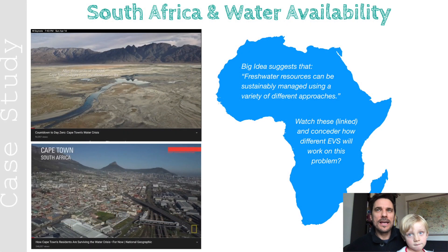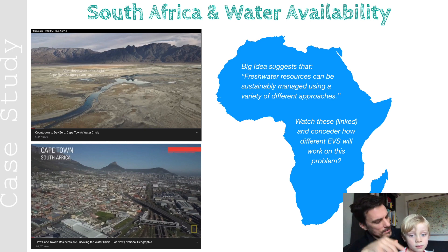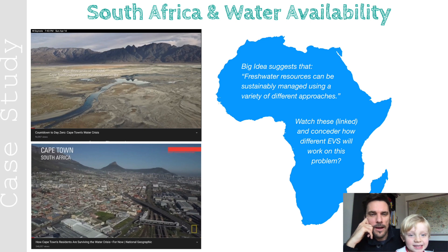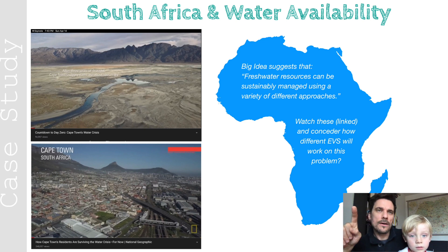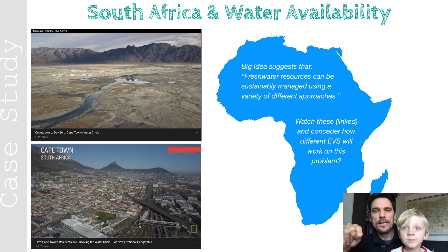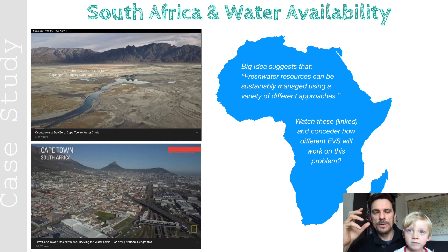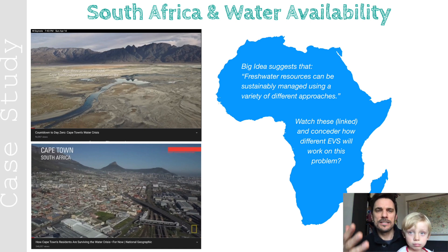The last thing we're going to look at is South Africa. They had a big drought in 2018 that dried up one of their big lakes where the whole city got water from. This links back to the big idea: fresh water resources can be sustainably managed using a variety of different approaches. I'd like you to think about this from different perspectives and be prepared to discuss how an ecocentric, anthropocentric, and technocentric person would try to manage the Cape Town water source to fix this problem.